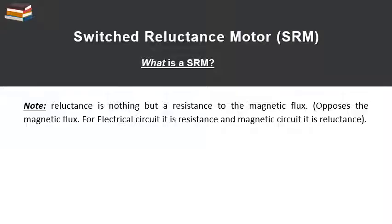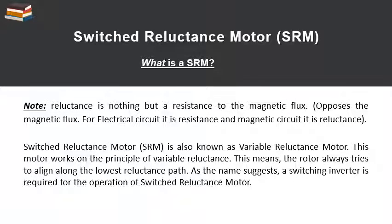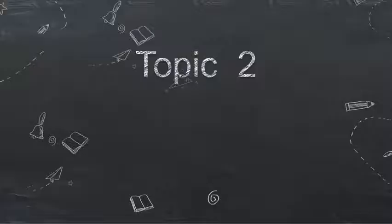Important note: reluctance is nothing but the resistance of the magnetic circuit. We can simply say that reluctance is the property of a magnetic material which opposes the flow of flux. The switched reluctance motor is also known as a variable reluctance motor. This motor works on the principle of variable reluctance — the rotor always tries to align along the lower reluctance path. A switch or switching inverter is required for the operation of the switched reluctance motor.